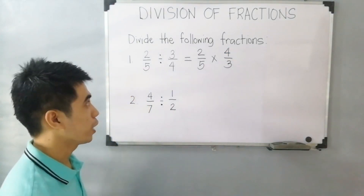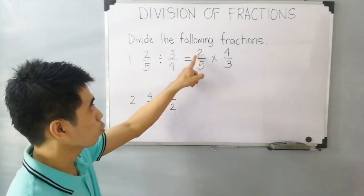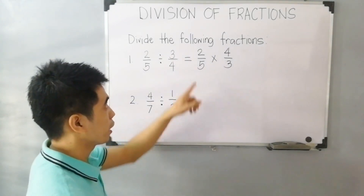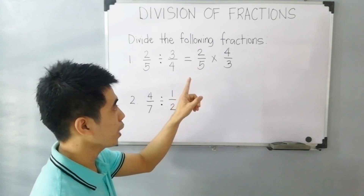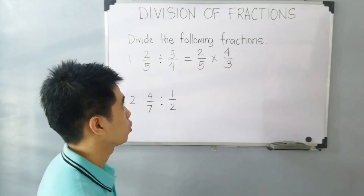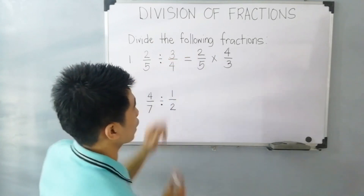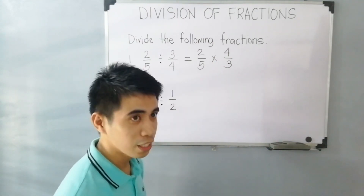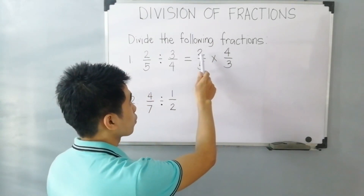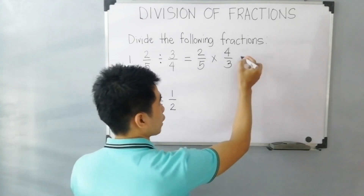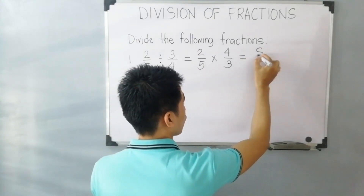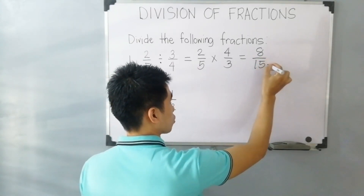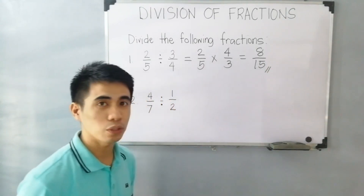Now let's perform multiplication: 2 over 5 times 4 over 3. First, analyze if the numerators can simplify the denominators. We cannot simplify 2 with 5 and 3, and we cannot simplify 4 with 5 and 3 either. Therefore, just multiply the numerators: 2 times 4 equals 8, and the denominators: 5 times 3 equals 15. So our final answer is 8 over 15.